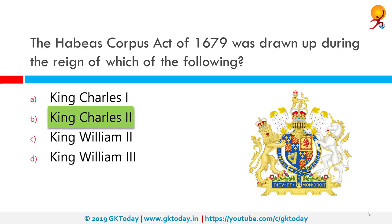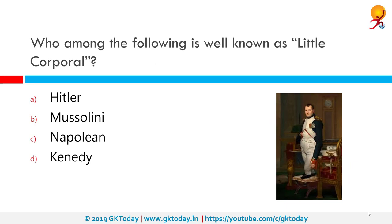The Habeas Corpus Act of 1679 was drawn up during the reign of which of the following? The correct answer is King Charles II. The Habeas Corpus Act 1679 is an act of the Parliament of England passed during the reign of King Charles II to define and strengthen the ancient prerogative writ of habeas corpus, whereby persons unlawfully detained can be ordered to be prosecuted before a court of law.